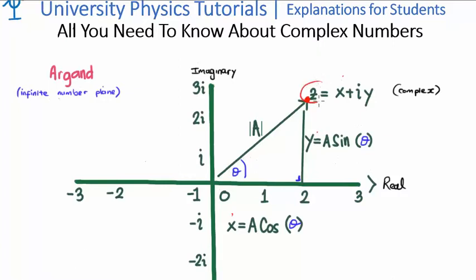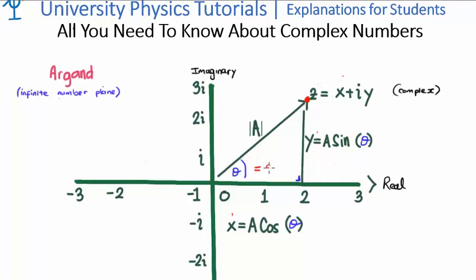The arbitrary complex number z can exist anywhere on the infinite number plane. If we consider a complex number, its real component corresponds to a section of the real number line, whereas its imaginary component corresponds to a section of the imaginary number line. In this case, x is approximately 2 and y is approximately 3, so z is approximately 2 plus iota times 3. We can define an angle theta here, which hints at using the Pythagorean theorem. When theta equals zero, the complex number comes down onto the real number line. When theta is 90 degrees, the complex number exists only on the imaginary number line.